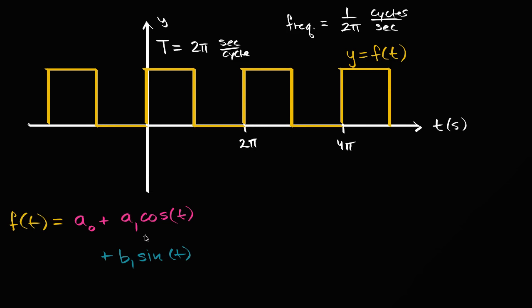And so what we're going to do is we're going to add sinusoids of frequencies that are multiples of these frequencies. So let's add a sub two, so another weighting coefficient, times cosine of two t.